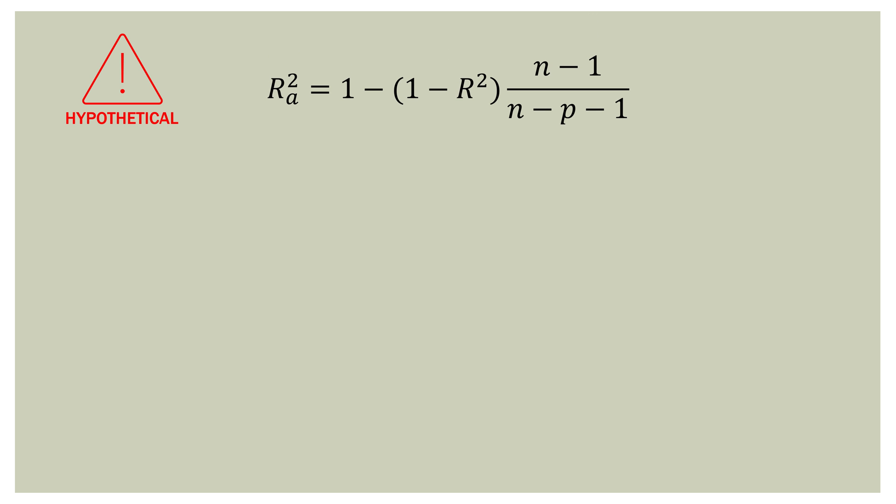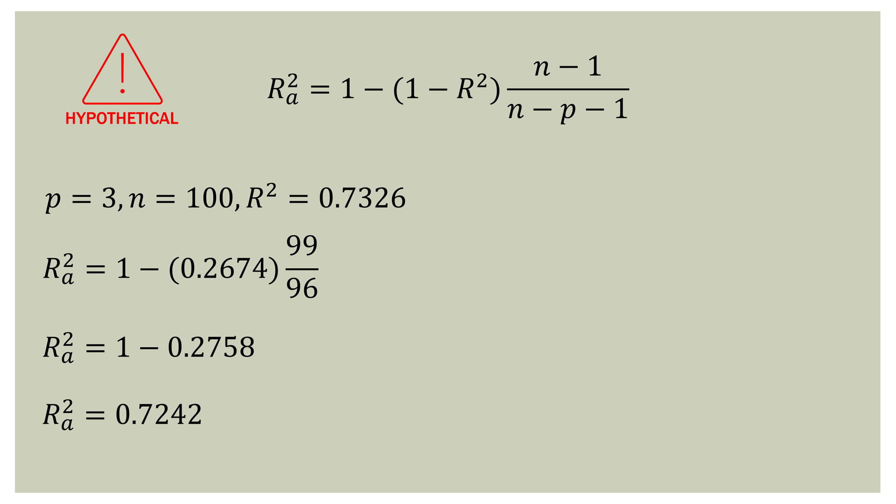Now the next couple of slides are hypothetical — not real numbers. I want to show what happens when you change one thing at a time in the adjusted R-square formula. Here is our baseline: three feature variables (P = 3), 100 observations (N = 100), R-square of 0.7326. Going through the math — 0.2674 is one minus 0.7326, and 99 divided by 96 is N minus one over N minus P minus one — we get adjusted R-square of 0.7242.